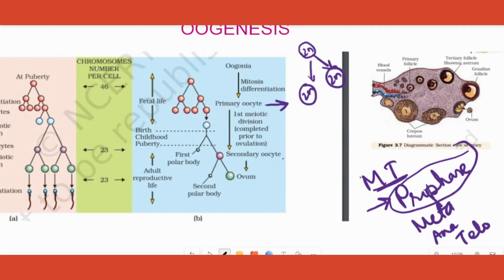The meiotic division enters and then stops at the primary oocyte stage itself. From that point, till puberty, no change happens in any of them. When the child goes into her first menstrual cycle, on the 14th day she has to ovulate — meaning release an ovum. Till then, no other change is happening. She has to release only one ovum.